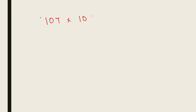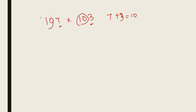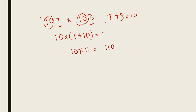Say 107 into 103. This trick can be applied on 2-digit, 3-digit, 4-digit, as well as 5-digit numbers. The only rule is that when the numbers at the units place are added we should get 10, and the numbers at the tens place should be same, that is 10 in this case. So 10 into 10 plus 1, that is 10 into 11, equals 110. And 7 into 3 is 21. So the answer is 11021.